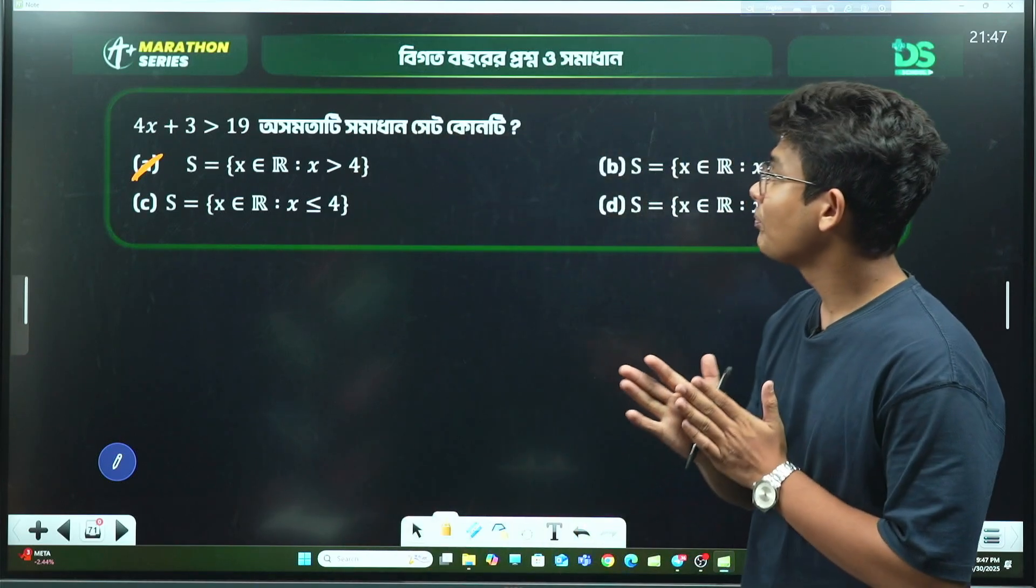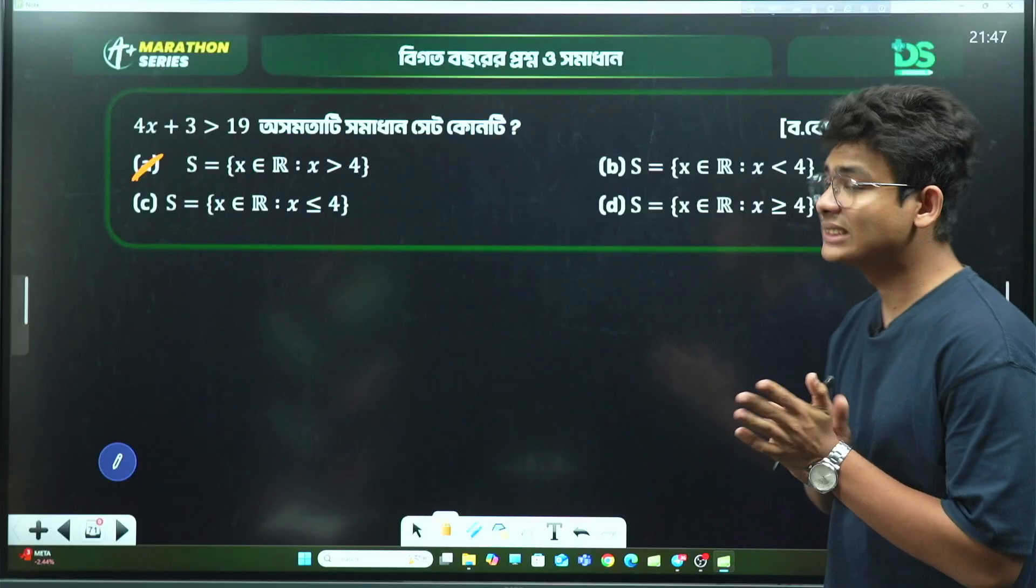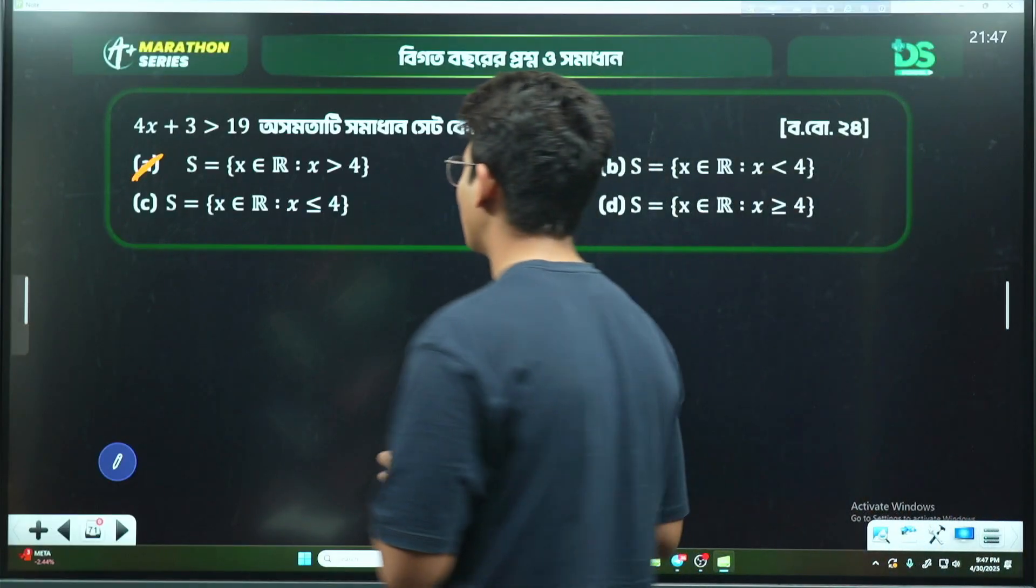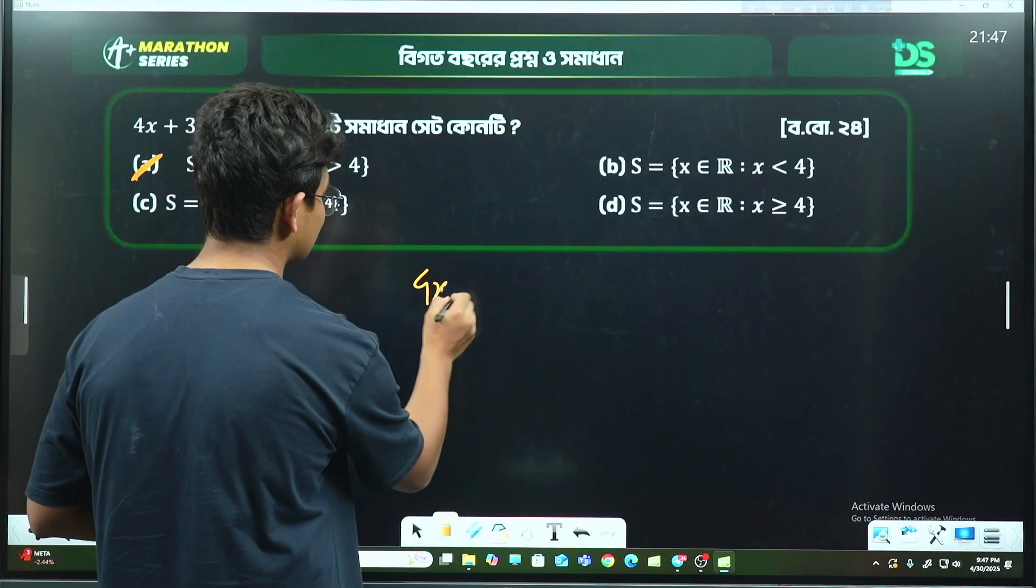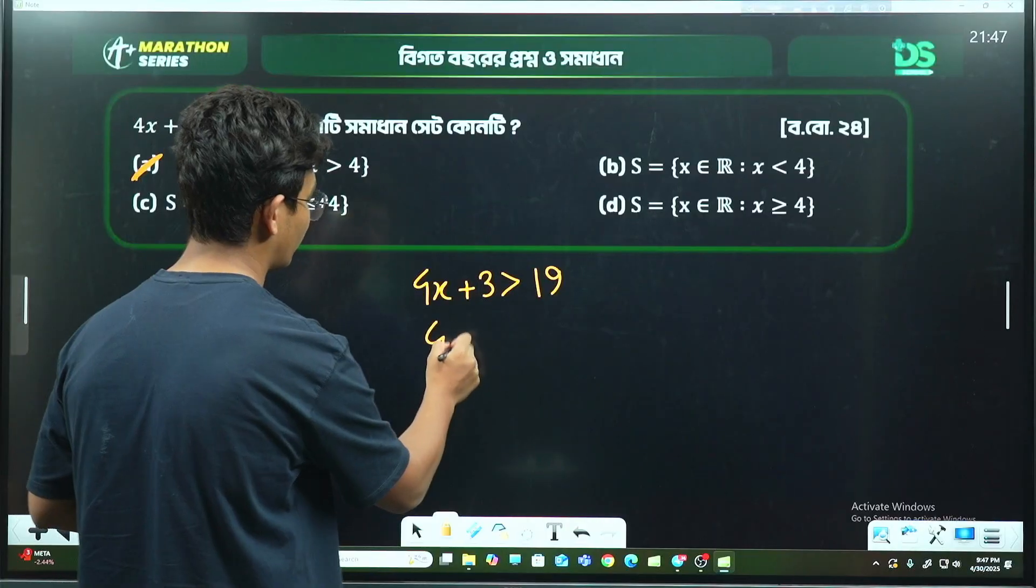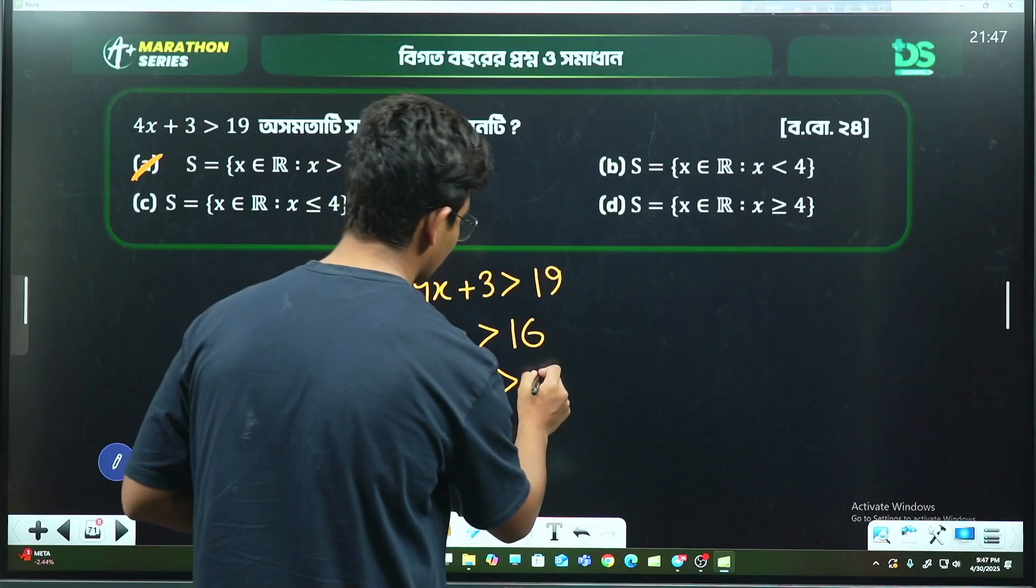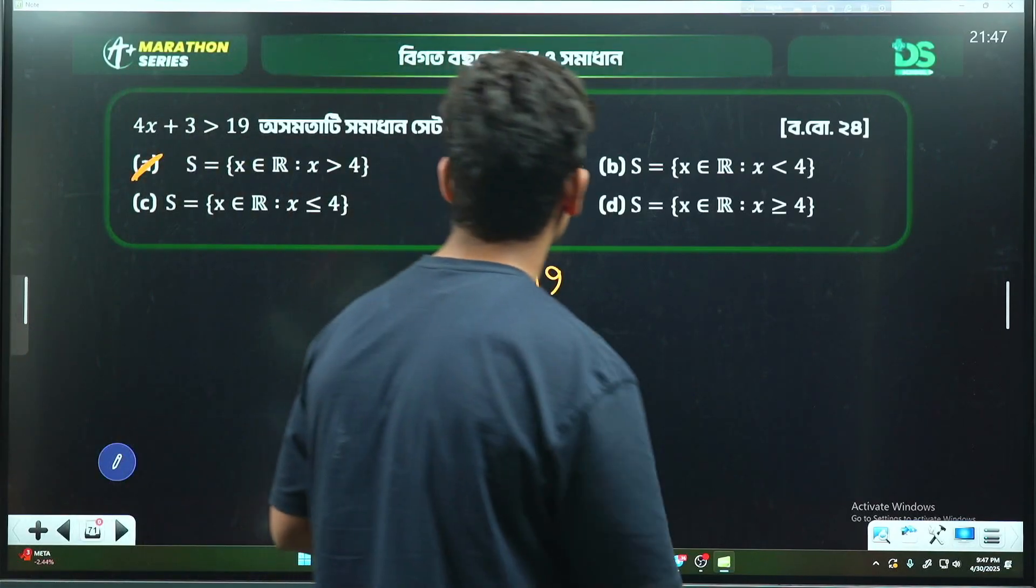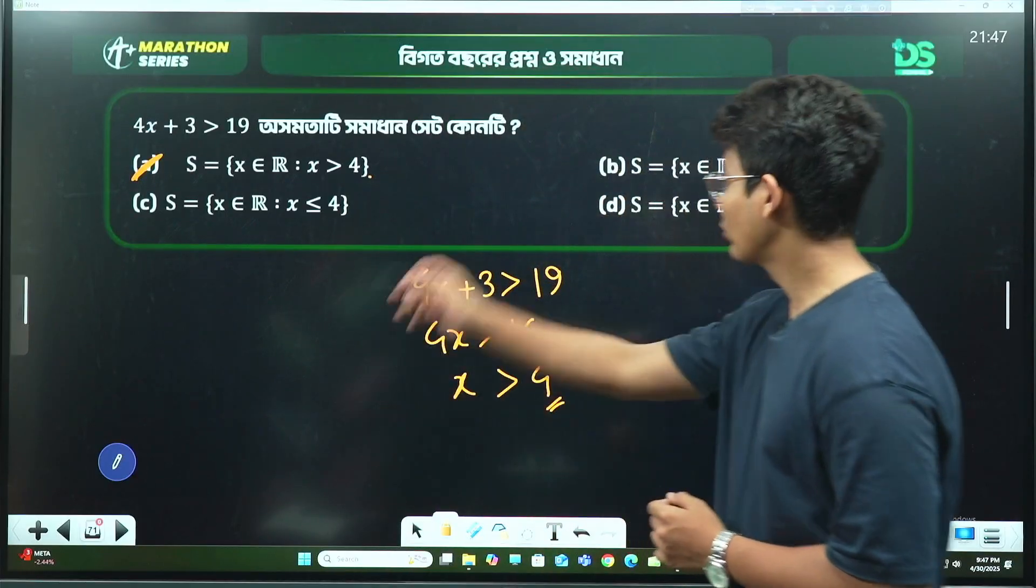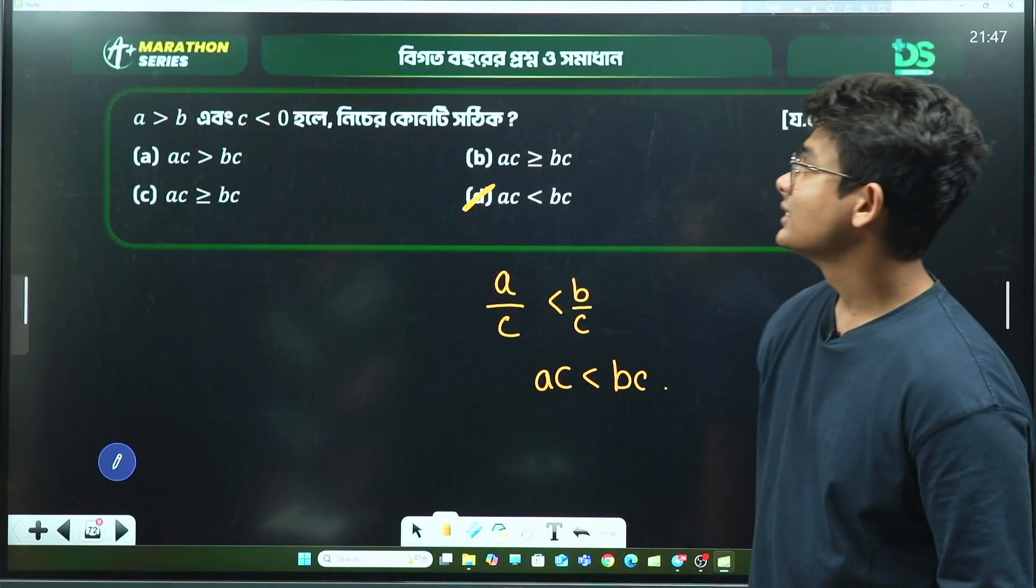Another problem: 4x + 3 > 19. Solving: 4x > 16, so x > 4. Checking the options, we need x greater than 4. This gives us the answer.